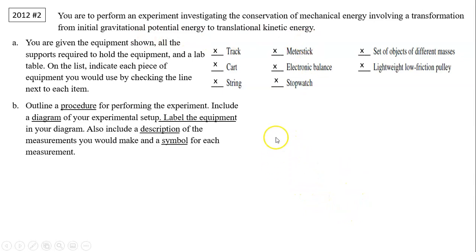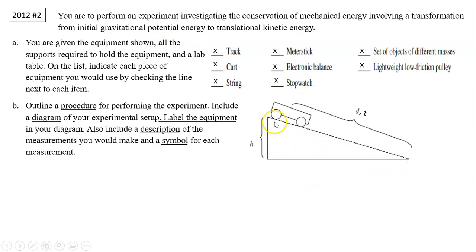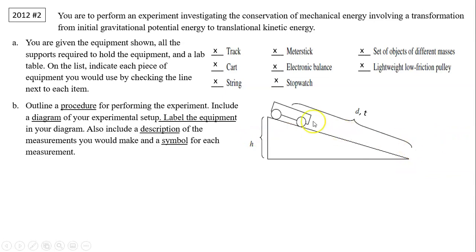The easiest way to set up is on an incline. At the beginning, you can measure the height and the mass to find the potential energy. Then you let the car go, measure the distance and time, and from there find average speed. From average speed you can find the final speed, and determine the kinetic energy. You now have two numbers — potential energy and kinetic energy — to confirm if they are the same.